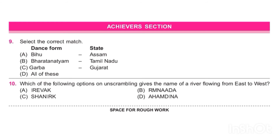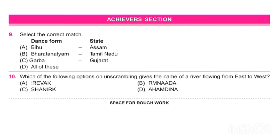Question number nine: select the correct match — dance form to state. Bihu is from Assam, Bharatanatyam is from Tamil Nadu, and Garba is from Gujarat. So the answer is D, all of these. In my previous video I explained that Bihu is the dance form of Assam, Bharatanatyam is the dance form of Tamil Nadu, and Garba is the dance form of Gujarat.